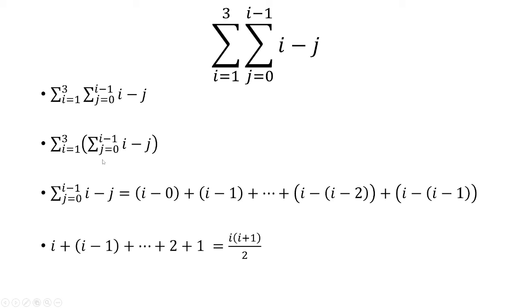So keep in mind, we just solved for this inside the parenthesis. So now what's left to do is to apply the sum from i equals 1 to 3 of i times i plus 1 over 2.